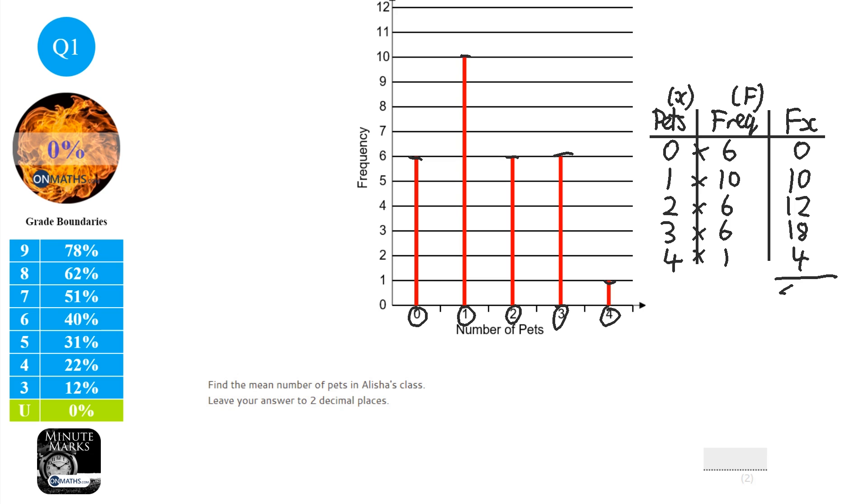Then what you want to do is add up the fx column, and we do that with a little sigma symbol, it just means sum of. So I'm going to do that with a calculator now, so 0 plus 10 plus 12 plus 18 plus 4, which is 44. You also want to add up the frequency column, so sum of frequency. It sometimes tells you in the question how many there are, so just double check that. So I'm going to add those together, so that's 29.